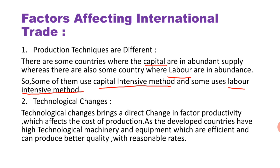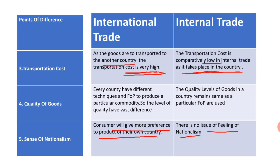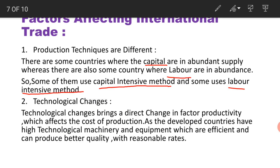The second factor affecting international trade is technological changes. Technological changes bring a direct change in factor productivity, which affects the cost of production. Developed countries have high technological machinery and equipment which are efficient and can produce better quality goods at reasonable rates.